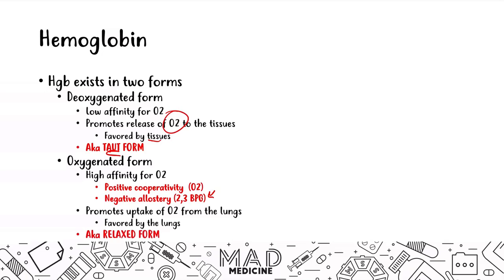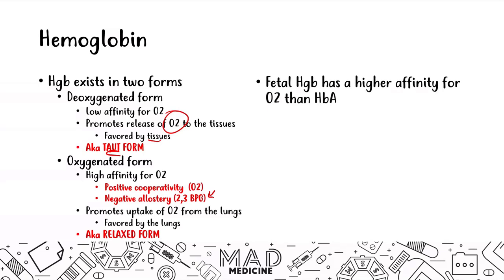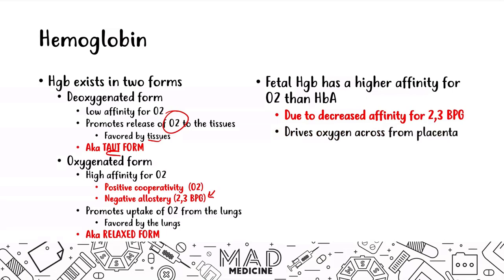Fetal hemoglobin has a higher affinity for O2 than adult hemoglobin. This is because fetal hemoglobin has a decreased affinity for 2,3-BPG, and it's going to drive oxygen across from the placenta. A fetus needs a lot of oxygen while it's growing and developing, so it needs a molecule with a higher affinity for oxygen than normal hemoglobin. The mother's hemoglobin has oxygen associated with it, but fetal hemoglobin has a very high affinity for oxygen in and of itself.